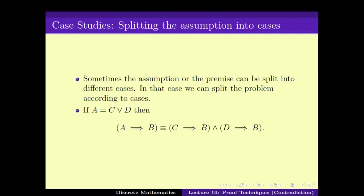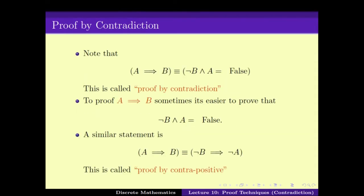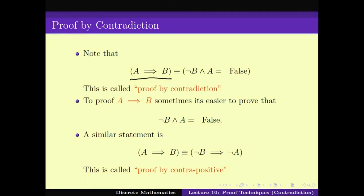Now, in this video lecture we will be looking at a completely new technique which we call proof by contradiction, where the idea is to view the problem in a different way. Here is the idea: proving A implies B is equivalent to the statement that not B and A is false. So in other words, to prove A implies B, one can prove that not B and A is false. This is what is called the proof by contradiction.